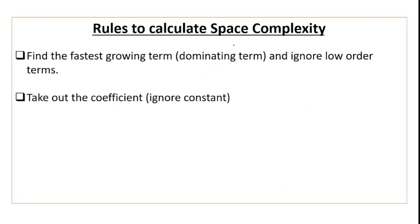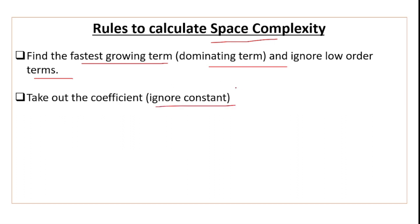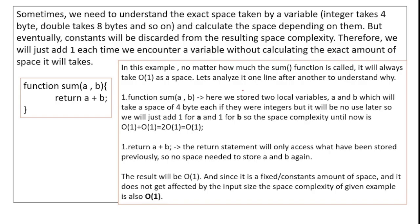The rules to calculate space complexity are the same rules used in time complexity. Find the fastest growing term — the dominating term — and ignore the lower order terms. Then take out the coefficient and ignore the constant.